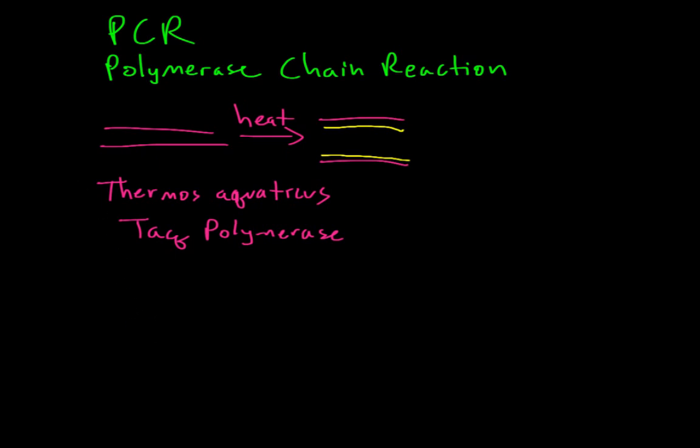So you start off with some DNA, and you apply heat and denature the DNA, so now you've got two strands. What you next need to do is you need to add a primer. And the primer gives the TAC polymerase a starting point. So the TAC polymerase comes in and basically is able to make the complementary strands.